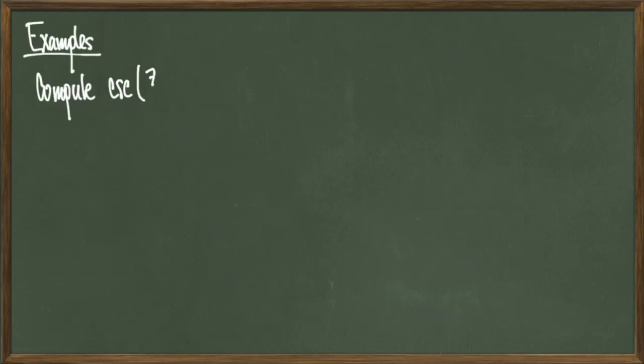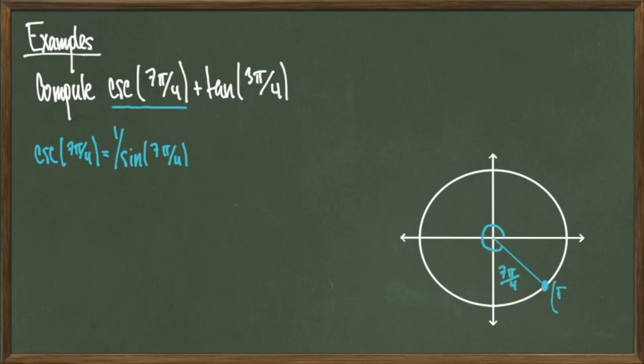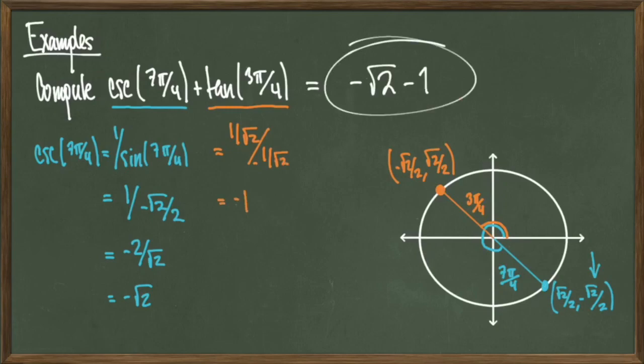For our last example, we'll compute cosecant of 7pi over 4 plus tangent of 3pi over 4. The definition of cosecant is 1 over sine. When we compute sine of 7pi over 4 we get -root 2 over 2, so cosecant gives -root 2. When we compute tangent of 3pi over 4 we get -1. Therefore our final answer is -root 2 minus 1.